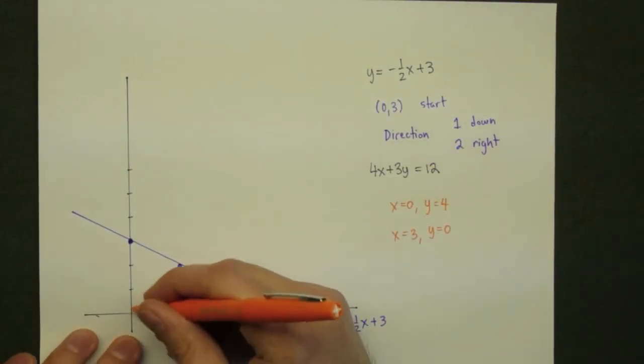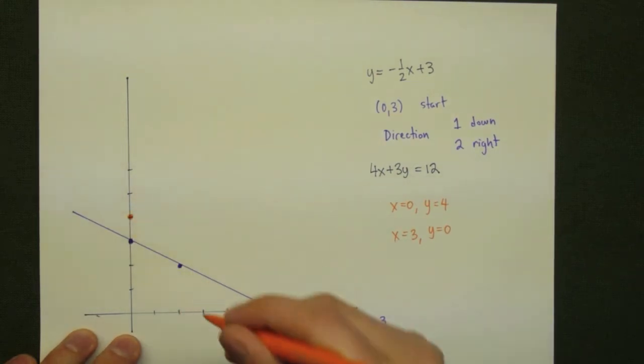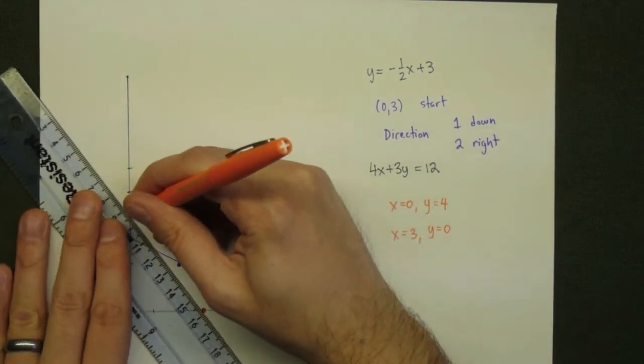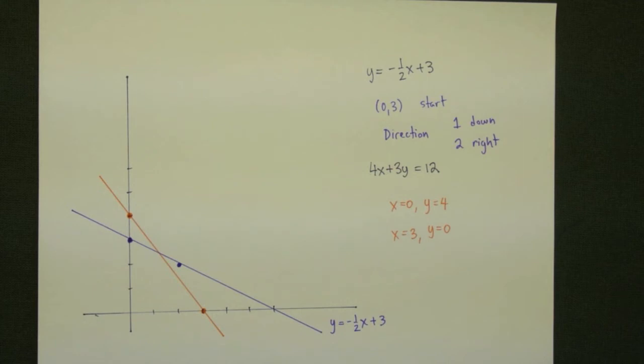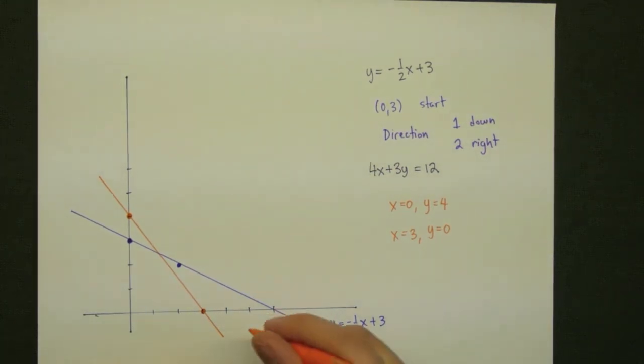So, we plot these two points. We have 0,4 and 3,0. Connect the two of these with a straight line, and we get the graph of our line. This graph represents exactly the equation 4x plus 3y is equal to 12.